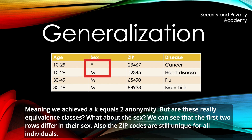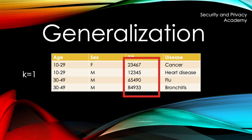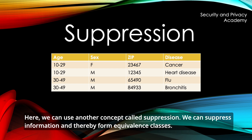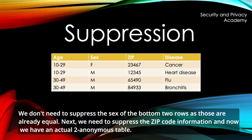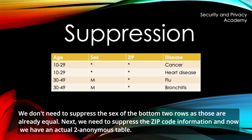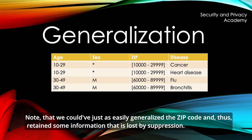But are these really equivalence classes? What about the sex? We can see that the first two rows differ in their sex. Also, the zip codes are still unique for all individuals. Here we can use another concept called suppression. We can suppress information and thereby form equivalence classes. We don't need to suppress the sex of the bottom two rows, as those are already equal. Next, we need to suppress the zip code information, and now we have an actual 2-anonymous table. Note that we could have just as easily generalized the zip code and thus retain some information that is lost by suppression.